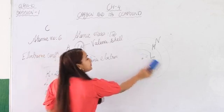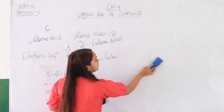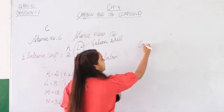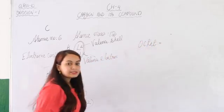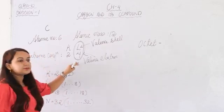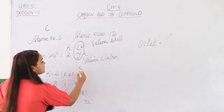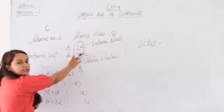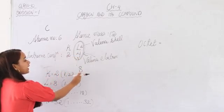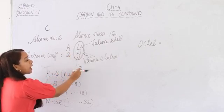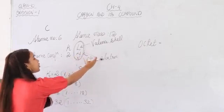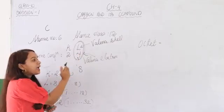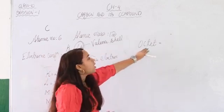Every compound needs to be stable, so there are certain rules for the stability of an atom or compound. There is a rule known as the octet rule, which means that for an atom to be stable, it needs to have 8 electrons in its outermost shell. Carbon has only 4 electrons, so it is not stable. It needs to acquire 8 electrons — either by sharing or gaining electrons from other atoms. This process of acquiring stability is known as the octet rule.